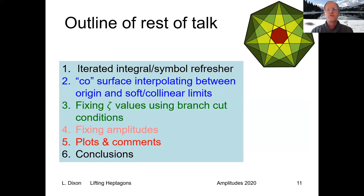For the rest of the talk I'll give you a quick refresher about iterated integrals and symbols. We're going to talk about a very interesting surface called the CO surface and how we end up fixing those zeta values that I mentioned. Once the zeta values are fixed, fixing the amplitudes will be relatively easy at least for those where the symbol was already known previously. Then of course I'll show you a few plots and make a few other comments.